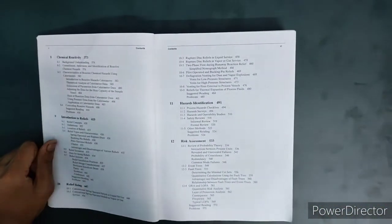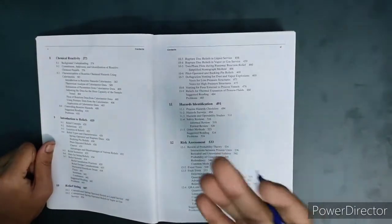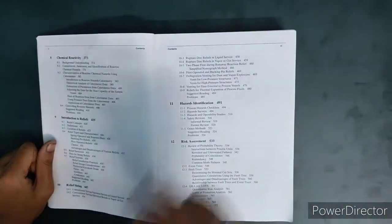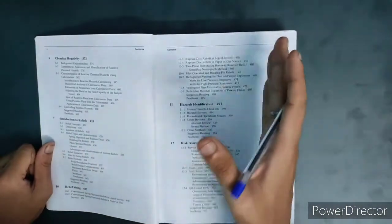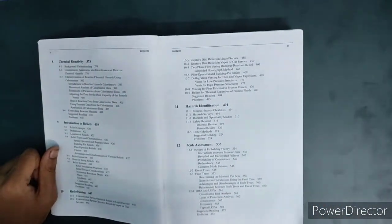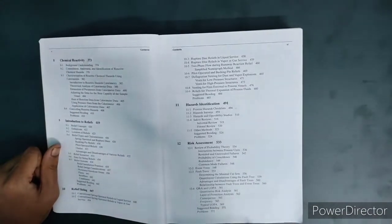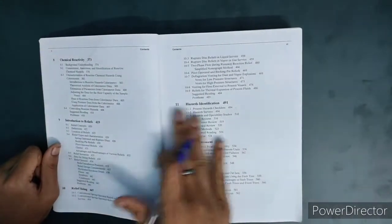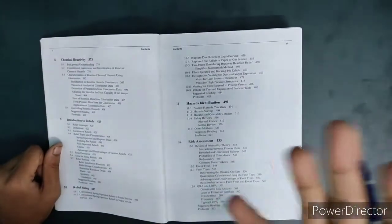In chapter number 10, if you are one of the professionals whose job involves the designing of relief systems, then this particular chapter is going to be useful where you are going to learn and discuss various factors which will be useful while designing the relief systems. Chapter number 11 is with regards to the hazard identification which is used in the process industries.